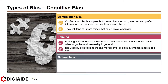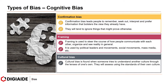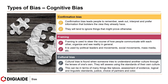Next, cultural bias. Cultural bias is found when someone tries to understand another culture through the lens of their own, assessing it using the standards of their own culture. This can apply to many things like taboos, assessment of evidence, logical and linguistic standards, justice, choice of partners, and color.